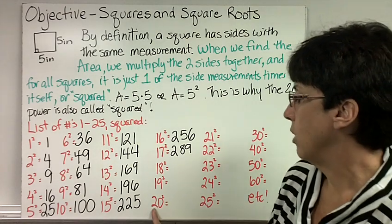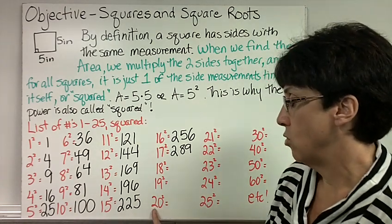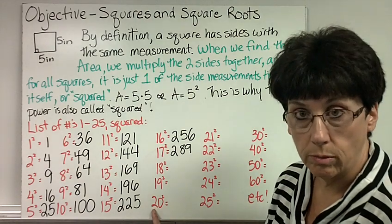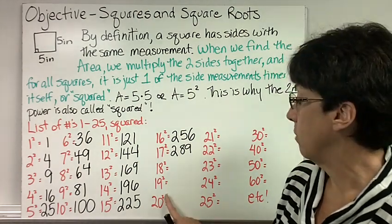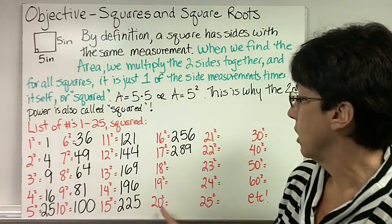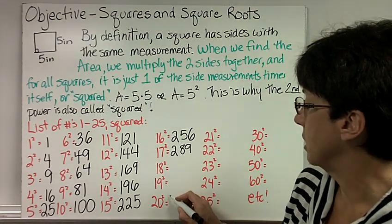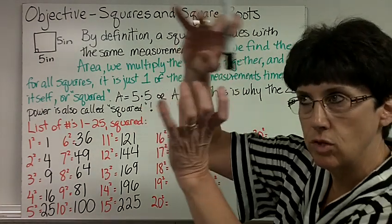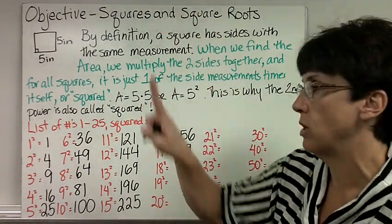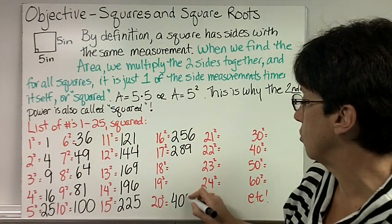But 20 squared, whenever you have a whole number and then a zero, you multiply the whole number, and then whatever the power is, that's how many zeros. No, that's not true. You multiply the whole number and then add two zeros. So 2 times 2 is, you actually would add the number of zeros that are in the problem. So 20 times 20 would have two zeros. So 2 times 2 is 4, and then two more zeros.